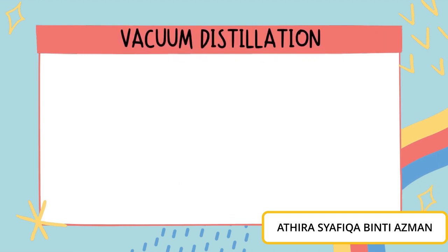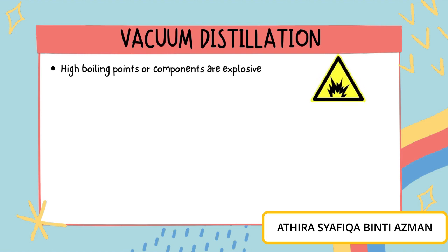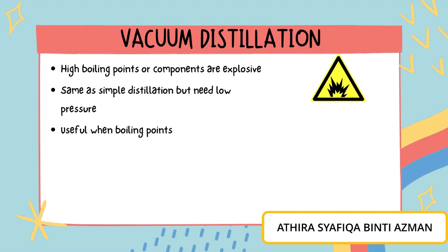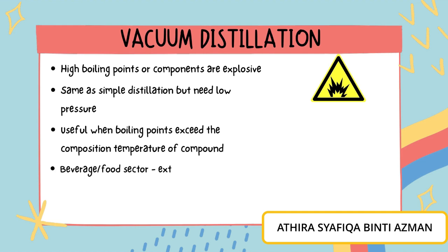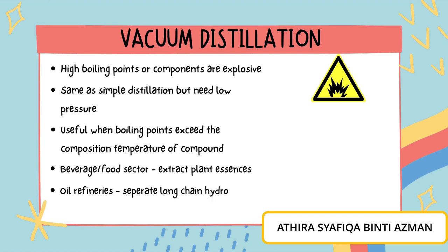The second type of distillation is vacuum distillation. It is used when we have very high boiling points or when the components are explosive. The process is similar to simple distillation, but it needs to lower the pressure in the distillation column, because lowering the pressure will lower the boiling points of components. This method is useful when the boiling points exceed the decomposition temperature of a compound. Beverage and food production sectors usually apply distillation to extract plant essences, and oil refineries use it to separate long-chain hydrocarbons.